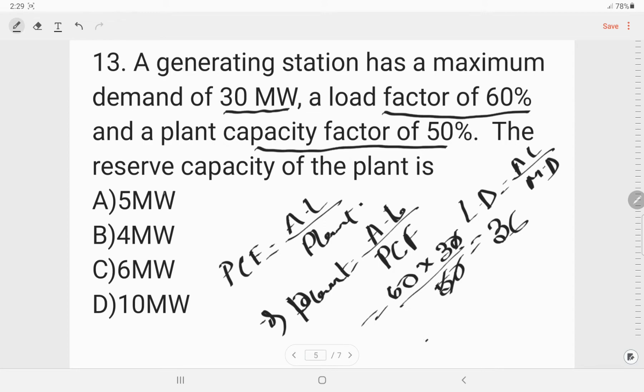So we need to find out the reserve capacity. Reserve capacity will be plant capacity minus the maximum demand that is 30. So 36 minus 30 will be 6 megawatt. Option C is the correct answer.